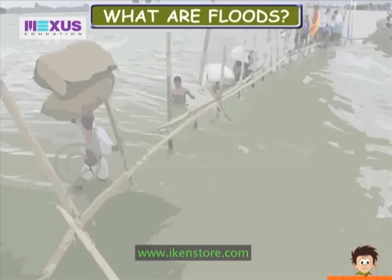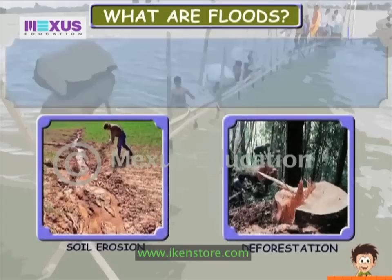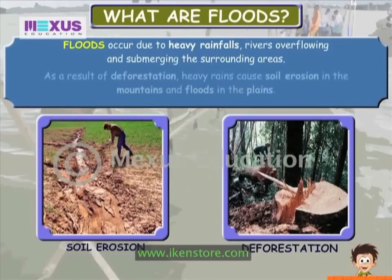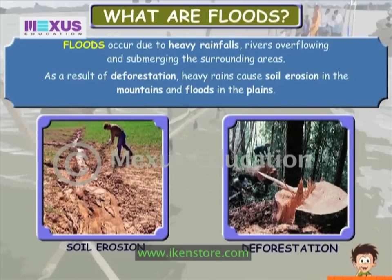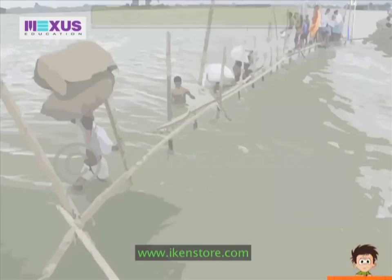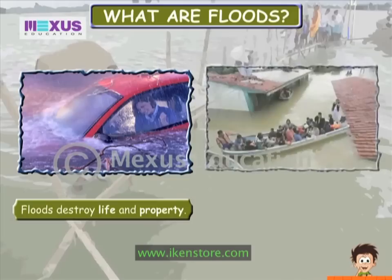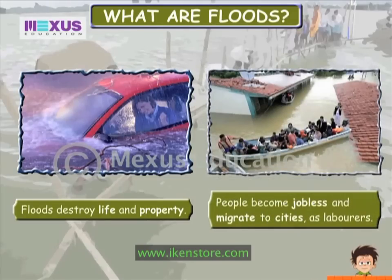What are Floods? Floods occur due to heavy rainfalls, rivers overflowing and submerging the surrounding areas. As a result of deforestation, heavy rains cause soil erosion in the mountains and floods in the plains. Floods destroy life and property. People become jobless and migrate to city as labourers.